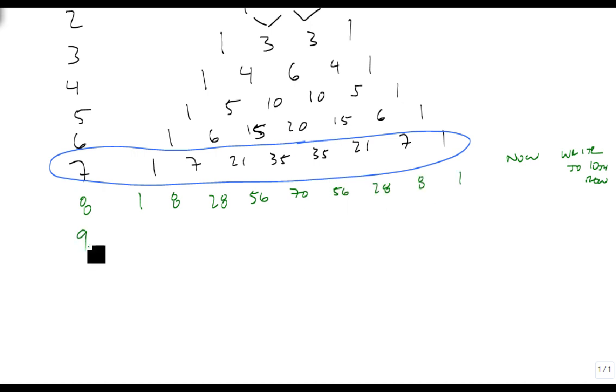The 9th row is 1, 9, 36, 84, 126, 126, 84, 36, 9 and 1.